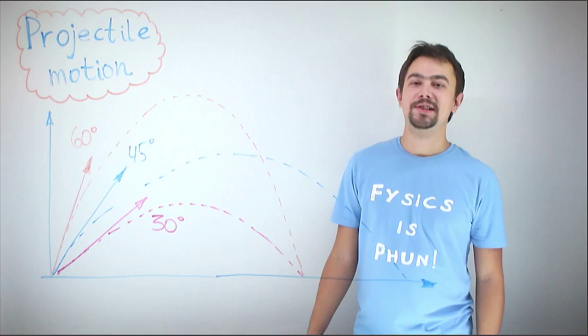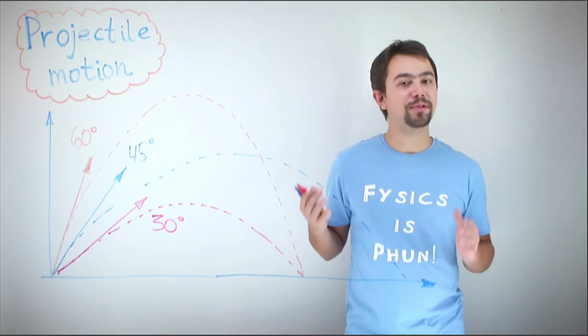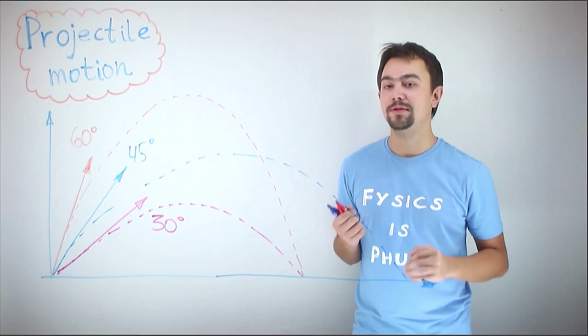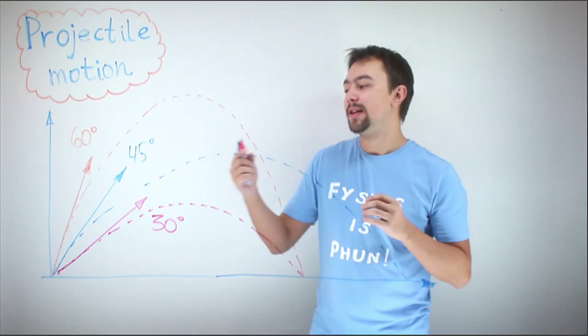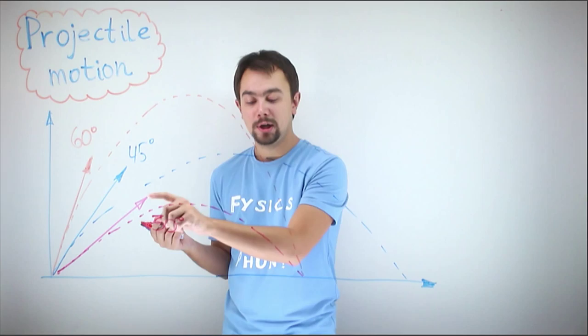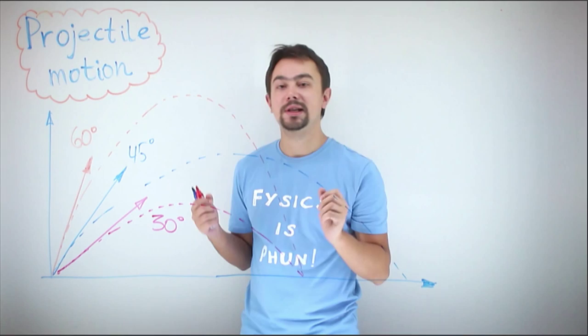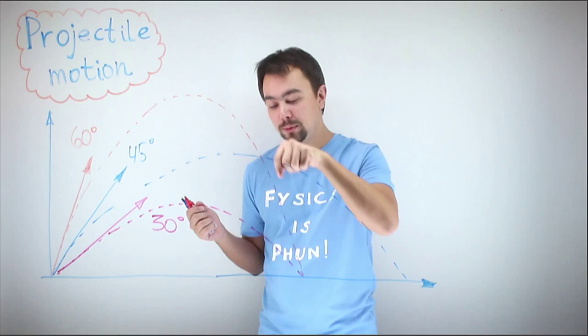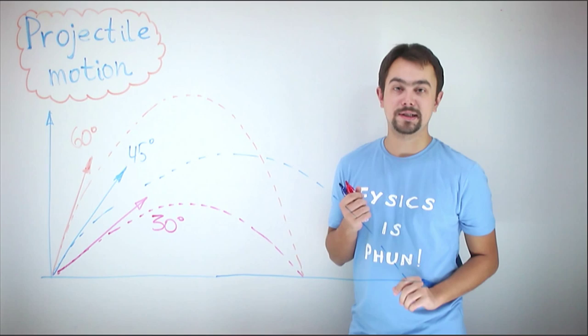Javelin throwers at the Olympics always try to throw at an angle of 45 degrees, and there's a reason for that. Theory predicts that a projectile launched at 45 degrees will have the maximum range. A projectile at 30 degrees goes lower with a smaller range, while one at 60 degrees takes a higher path but achieves the same range as the 30-degree projectile. This holds true when we don't account for air resistance.